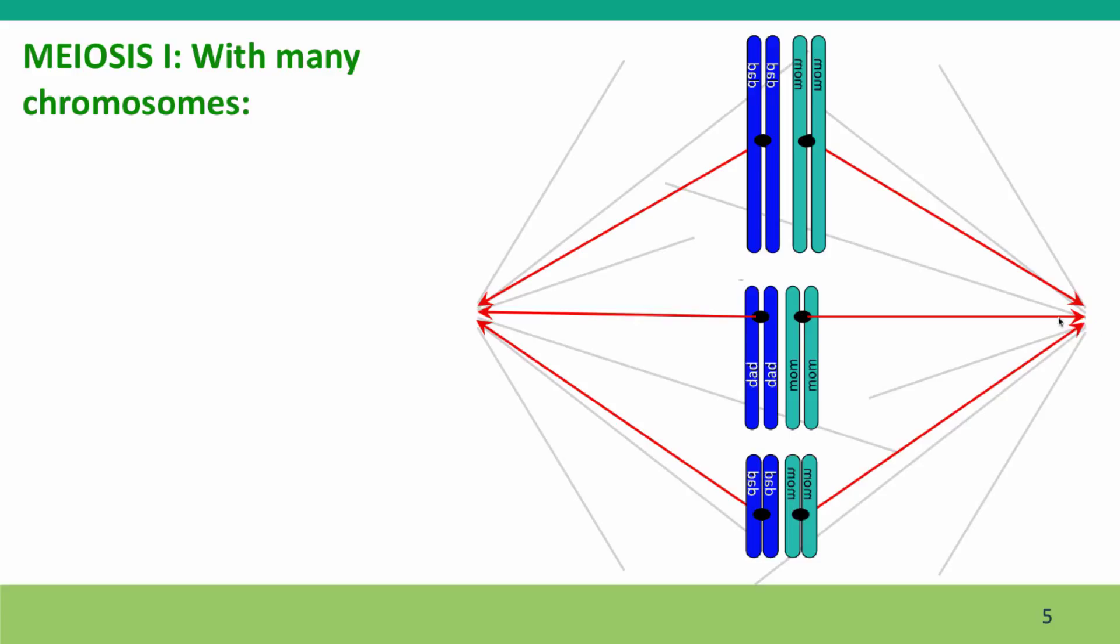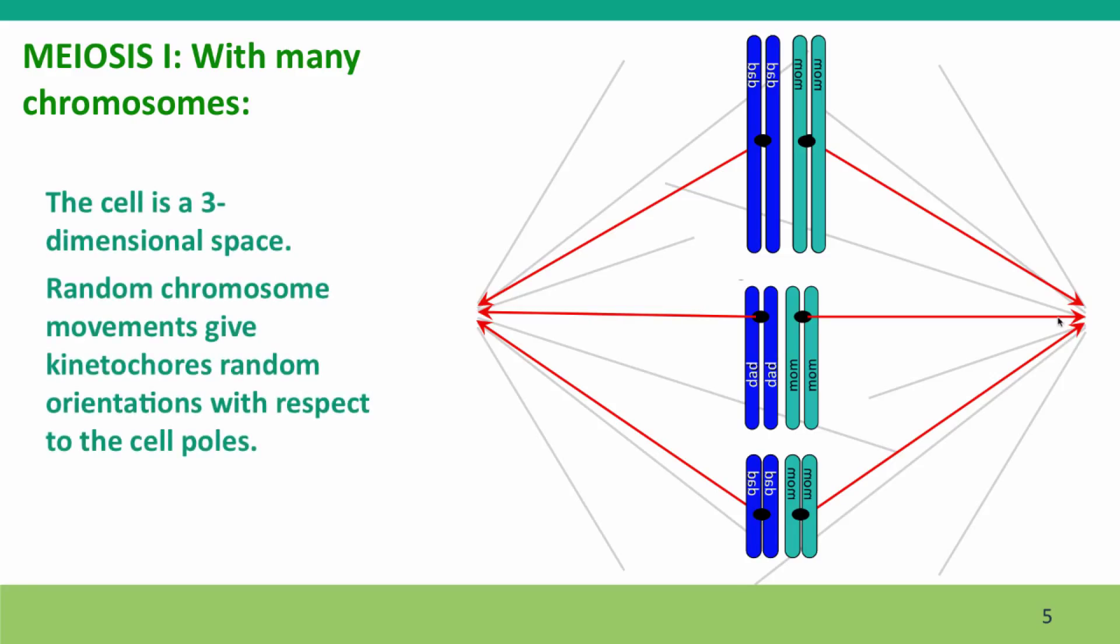Now I've made a little demonstration to help you visualize the cause of this. Basically it's that the cell isn't a flat sheet of paper or a flat computer screen. The cell is a three-dimensional space and the chromosomes are moving through three dimensions.